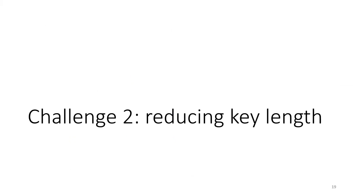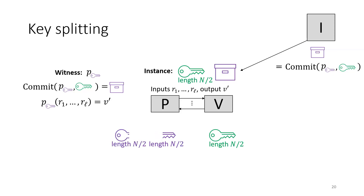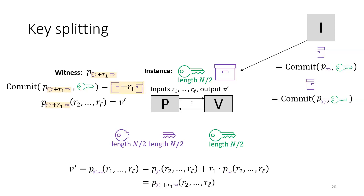To address the challenge of reducing the key length: essentially, we can't commit to a key of length N using a key of length N/2 with this commitment scheme. To address this, you can do the obvious thing and split the key of length N into two parts, having the preprocessing algorithm commit to each separately. The only thing we need to do is change the witness and the relation that the prover proves to the verifier so that it's a statement about keys of length N/2 instead of N. We can do this using the properties of multilinear polynomials and the homomorphic properties of commitments.